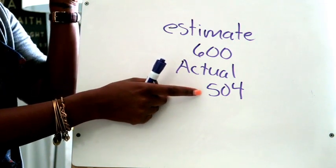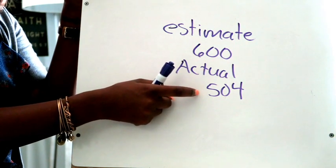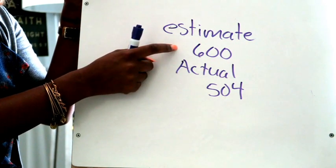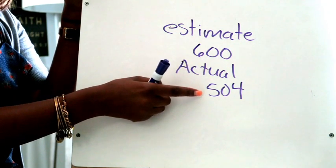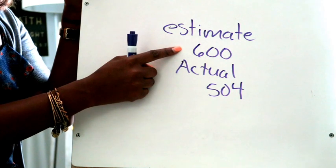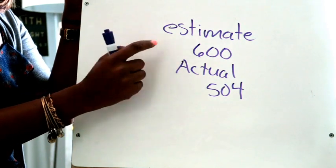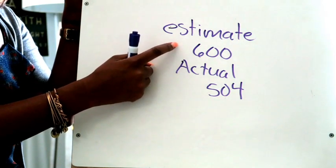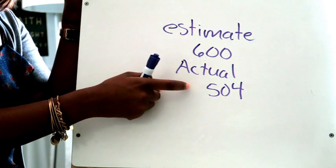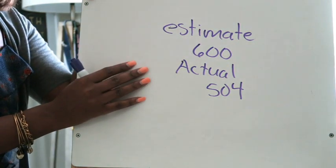As long as you're within 100 or so of your estimate, you should be fine. Also realize that your estimated answer is a little bit higher because if you remember, when we were making our compatible numbers, we rounded those numbers up. So our estimated answer is going to be higher than our actual answer. I'm going to flip the camera around and give you some final thoughts.